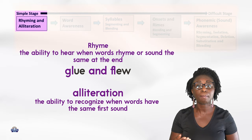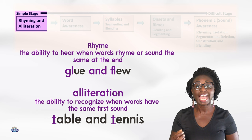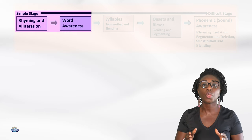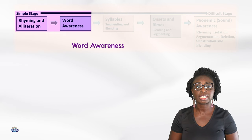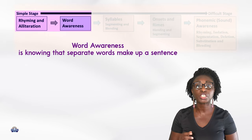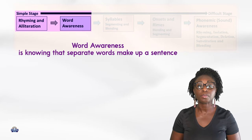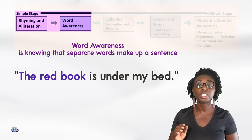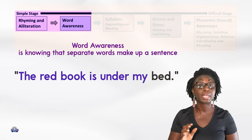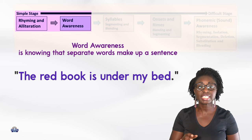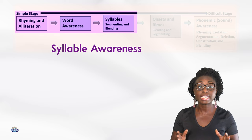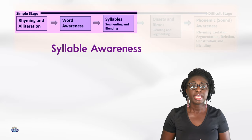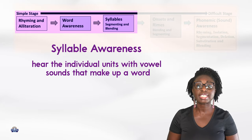For example, 'table' and 'tennis'. Word awareness is knowing that separate words make up a sentence. For example, 'the red book is under my bed' — this sentence has seven words.